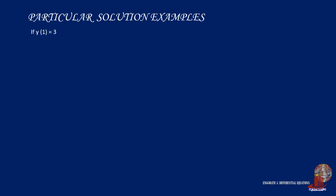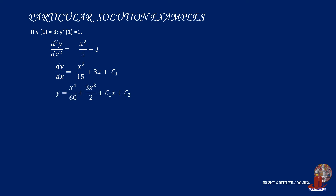Now let's show the full procedure for finding both the general and particular solutions for a DE, given that y at x equals 1 is 3 and y prime at x equals 1 is 1. We have already established the general solution: the first derivative function is x cubed over 15 minus 3x plus c1, and the general solution is y equals x to the fourth power over 60 plus 3x squared over 2 plus c1x plus c2.